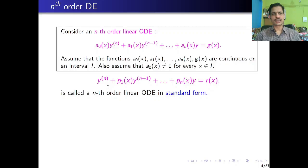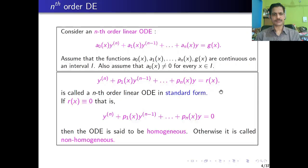The nth order linear ODE is said to be in standard form if we can write it as y⁽ⁿ⁾ + p₁(x) y⁽ⁿ⁻¹⁾ + ... + pₙ(x) y = r(x). If r(x) = 0, we call it a homogeneous ODE; if r(x) ≠ 0, we call it a non-homogeneous ODE.